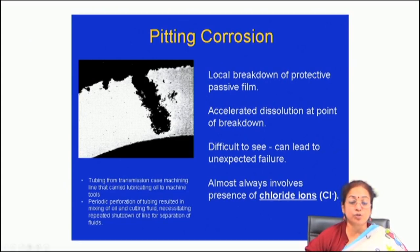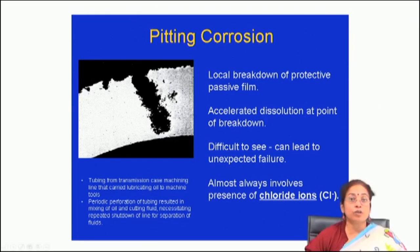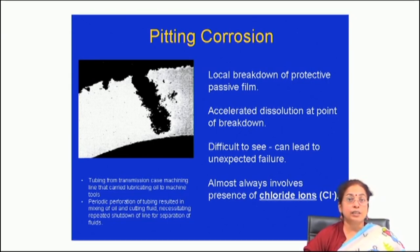This leads to formation of pits, and the pit actually propagates in the direction of gravity. As a result, the pits are of very large aspect ratio, and it is a dangerous form of corrosion. Once the pit formation starts it propagates in an autocatalytic fashion, and within a very short period of time there is perforation of the material, which is not even visible. When you see the pitted surface you will find pit formations here and there; sometimes it is visible, sometimes it might not be visible because it is covered by corrosion debris.